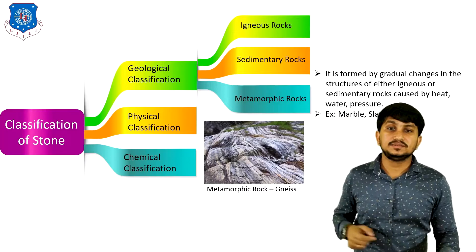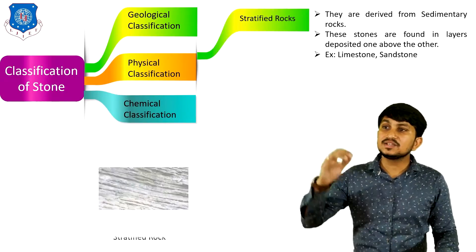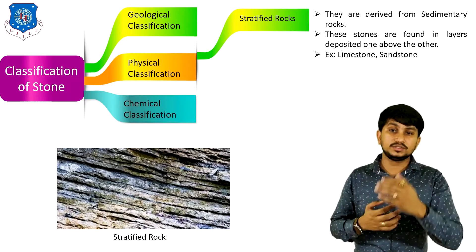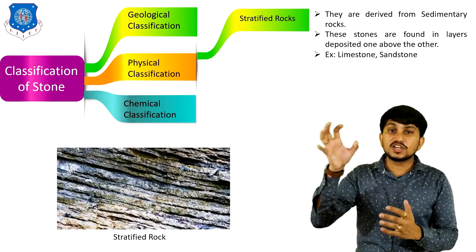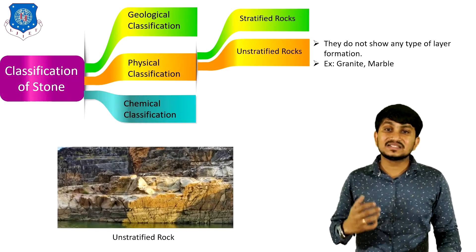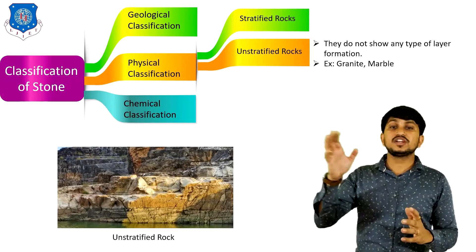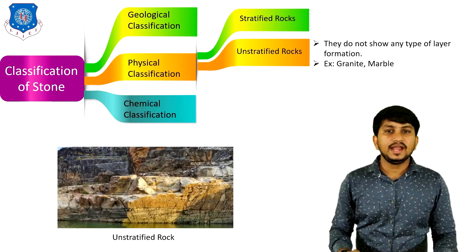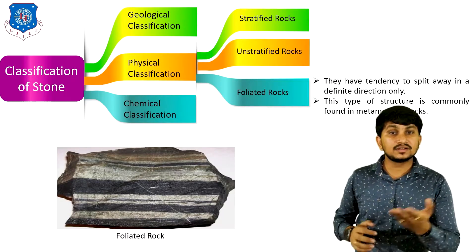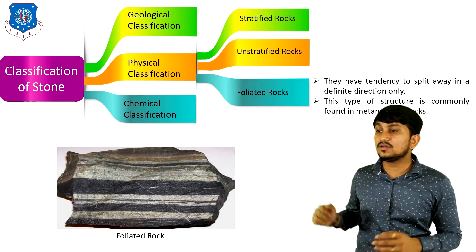In physical classification, the first type is stratified rocks, derived from sedimentary rocks. These stones are found in layers deposited one above the other. Examples are limestone and sandstone. The second type is unstratified rocks, which do not show any layer formation. Examples are granite and marble. The third type is foliated rocks, which have a tendency to split in a definite direction only. This structure is commonly found in metamorphic rocks.